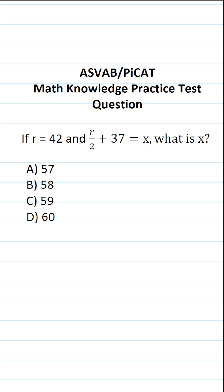This math knowledge practice test question for the ASVAB and PiCAT says if r equals 42 and r divided by 2 plus 37 equals x, what is x?